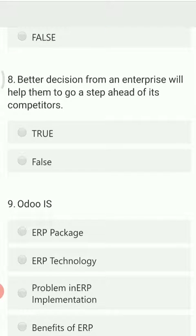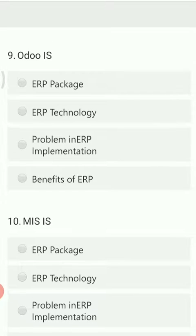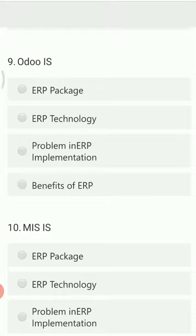Better decisions from an enterprise will help them to go a step ahead of its competitors. The options are true or false. The right answer is true. Next: Odoo is an ERP package — the options being ERP package, ERP technology, problem in ERP implementation, and benefits of ERP. Odoo is an ERP package.